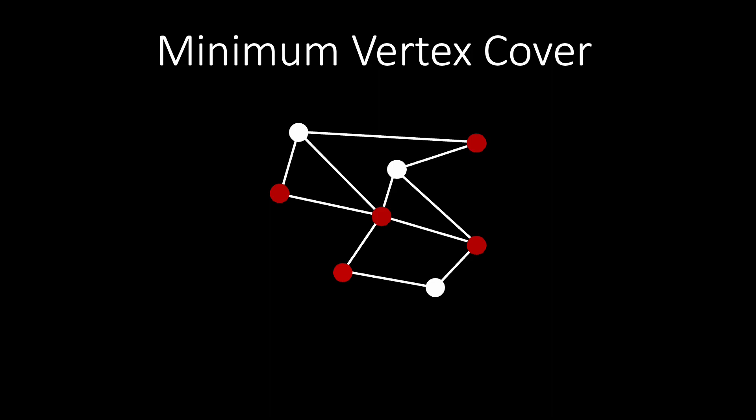The quality measure in this optimization problem is the number of vertices in the vertex cover. In the corresponding decision problem, we determine if a graph contains a vertex cover of size at most k.